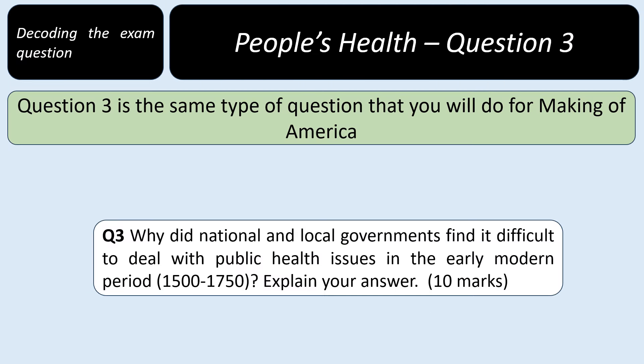Let's have a look at an example question three. Just a reminder that question three is the same type of question that you'll do for Making of America, so if you get your example right here, you'll be getting it right for Making of America too. The question says: why did national and local governments find it difficult to deal with public health issues in the early modern period, 1500 to 1750? Explain your answer. It's worth ten marks — five marks for use of knowledge and five marks for use of analysis.